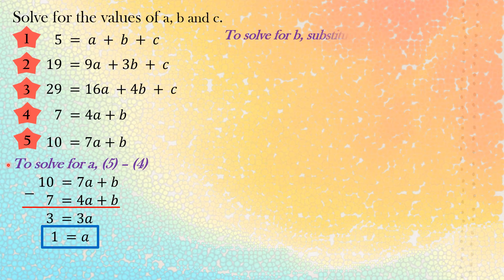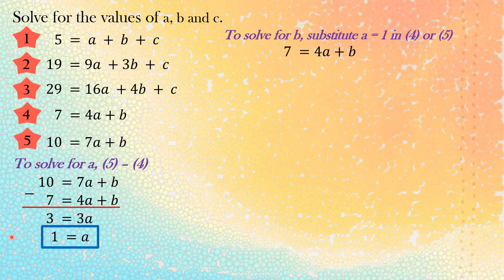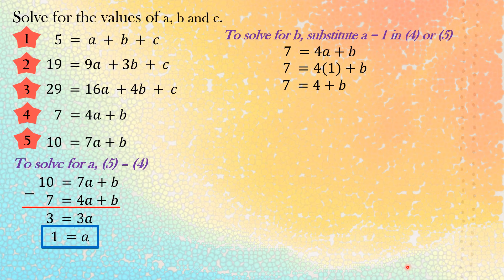Now that we have the value of a, to solve for the value of b we substitute a = 1 into equation 4: 7 equals 4a plus b, which becomes 7 equals 4 times 1 plus b, so 7 equals 4 plus b. Transposing 4 to the left side gives us negative 4, and therefore the value of b is positive 3, because 7 minus 4 is 3.